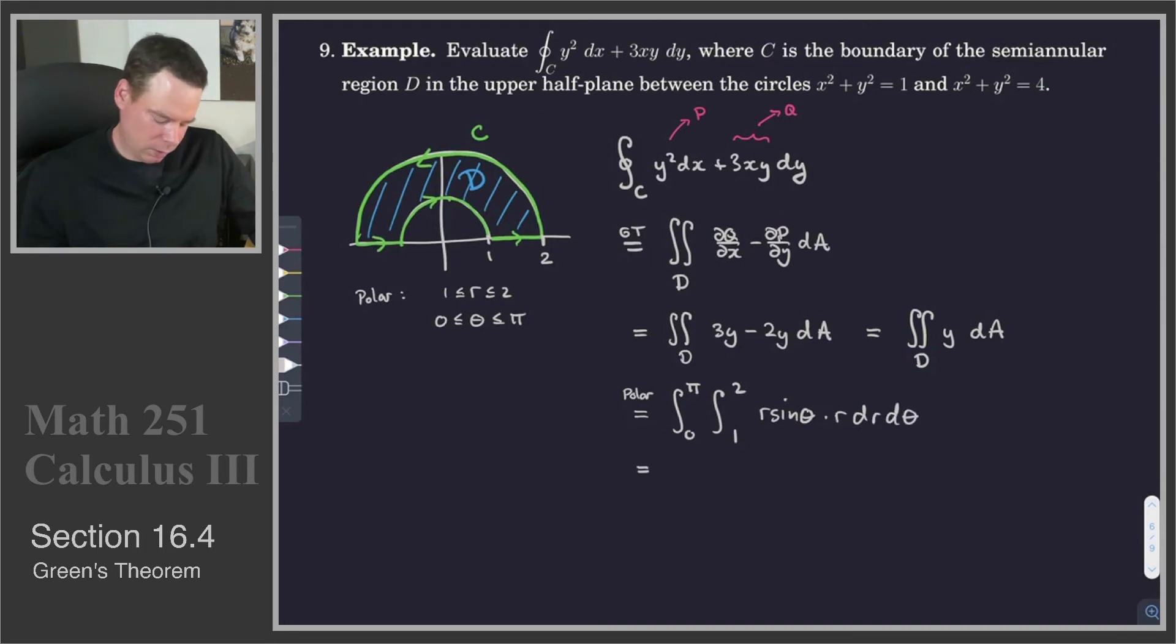And so this nicely separates because we can split off our theta integral as the integral from 0 to pi of sine theta d theta. And then we can split off the r integral 1 to 2 of r squared dr. It's a nice separable integral.